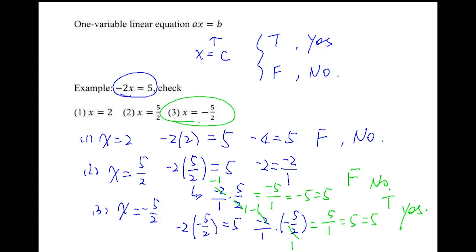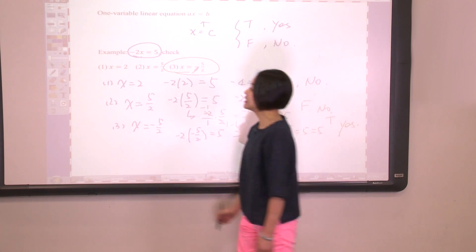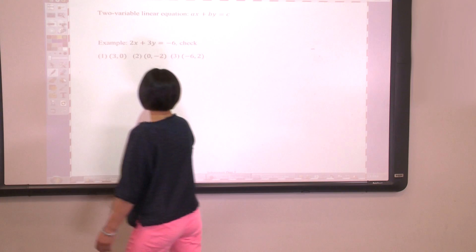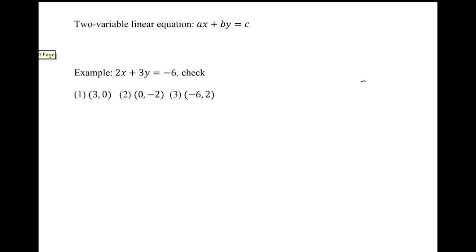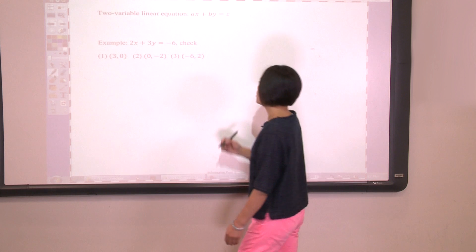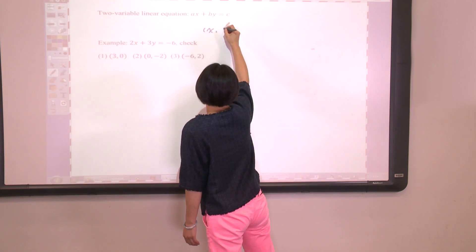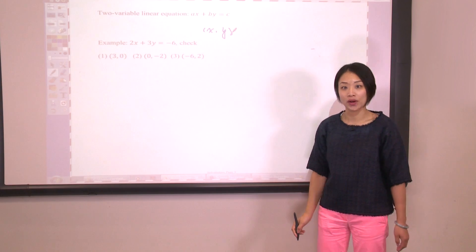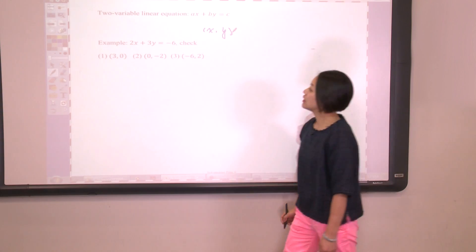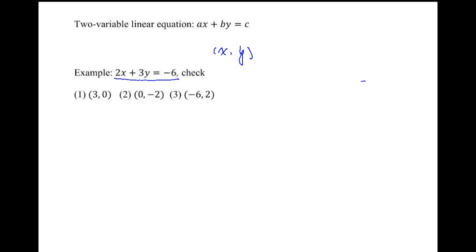This is a true statement, so x equals negative 5 over 2 is a solution of this equation. Now let's turn to the next page and talk about a two-variable linear equation, ax plus by equals c. All we need to do is plug in the values of x and y and then check. Let's try this example: 2x plus 3y equals negative 6.